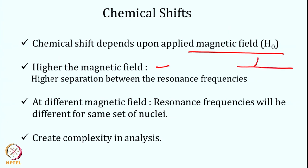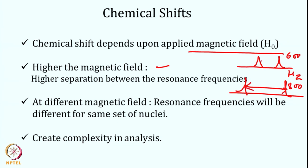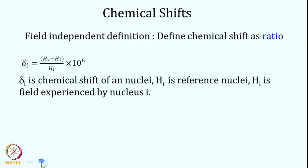If we express resonance frequency in hertz, recording on 600 MHz versus 800 MHz gives different separations between lines. While higher magnetic fields are better for resolving spectra, expressing chemical shift in hertz creates a problem: for the same set of nuclei, the resonance frequency differs at different field strengths, which creates complexity in analysis.